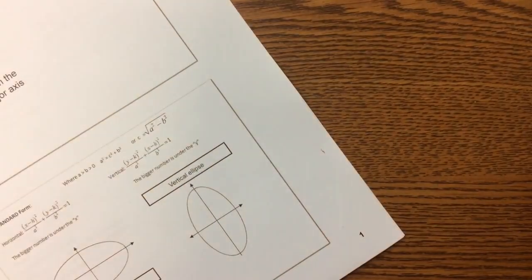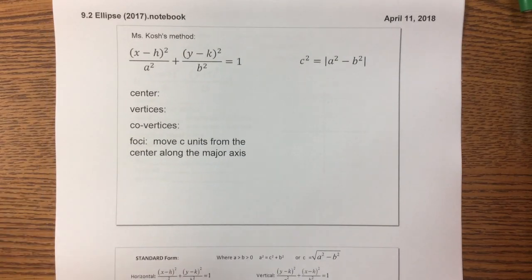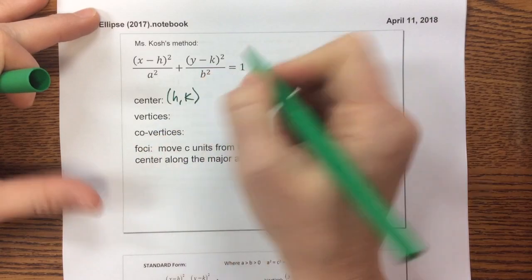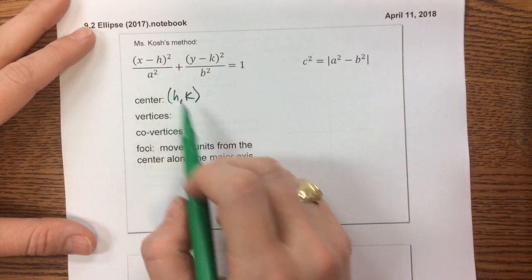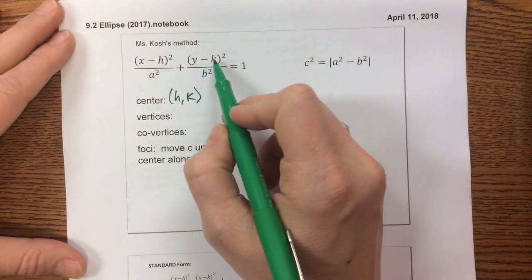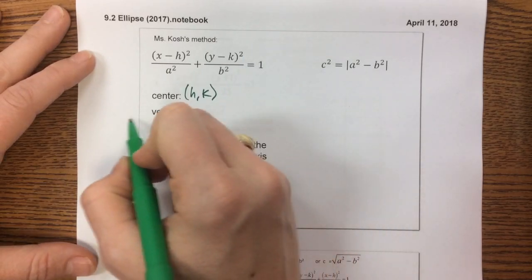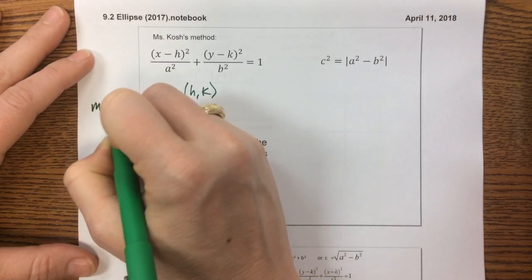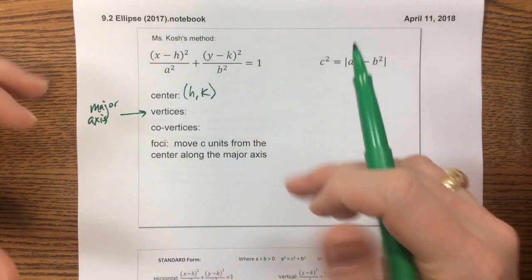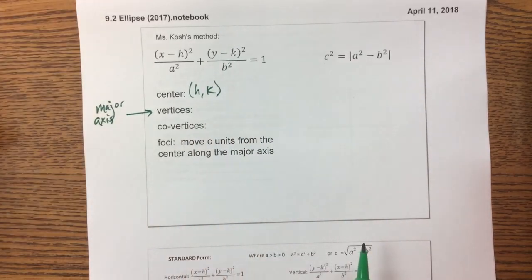Now let's look at some problems. I teach it slightly differently than Mr. Loach does, so I'll try to talk through both. The way this is set up is HK is still our center, and then when we graph this we start at HK, move A units along in the X direction, and B units along the Y direction. The vertices are always on the major axis, and it depends on whether A is bigger than B — this will work better if we actually have a practice problem.